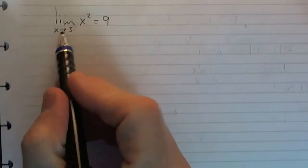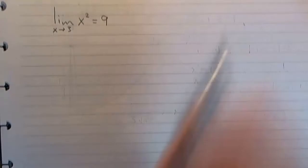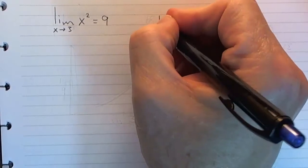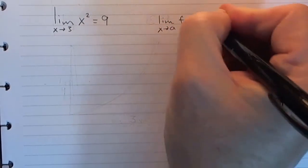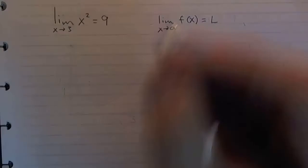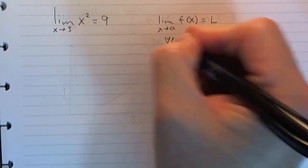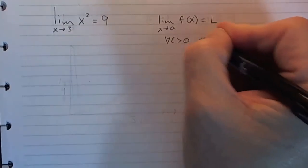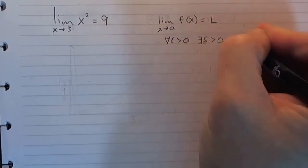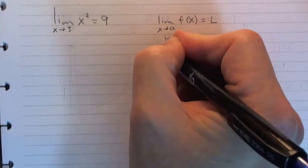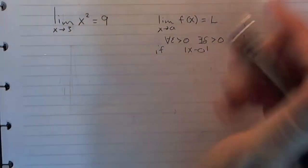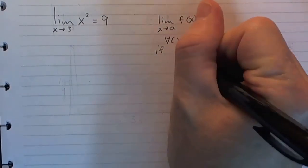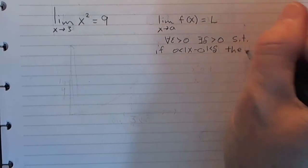Let's consider this limit: the limit as x goes to 3 of x squared equals 9. Let's remember what this means in general. The limit as x goes to a of f of x equals L means that for all epsilon greater than 0, there exists a delta greater than 0, such that if this is true, then this is true.